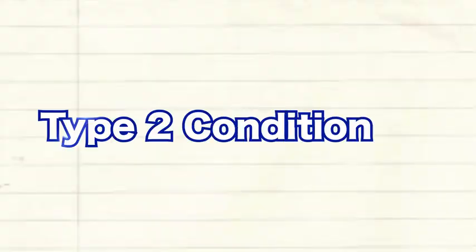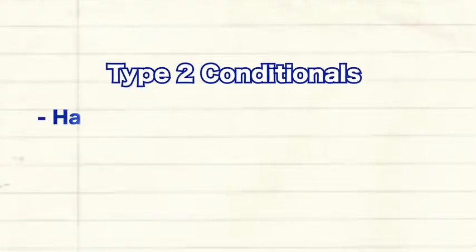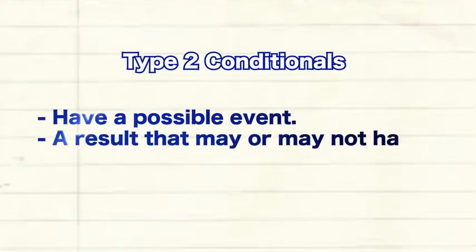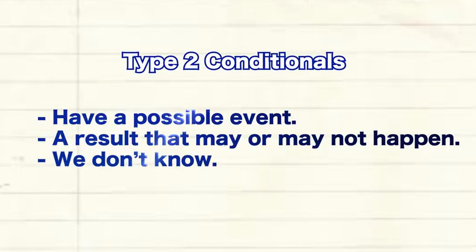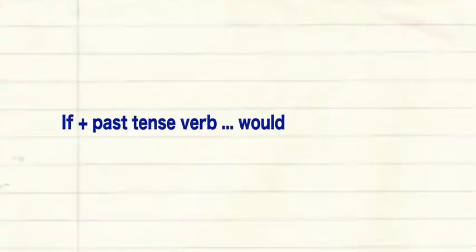Type 2 conditionals have a possible event and a result that may or may not happen. We don't know. Here is the pattern: 'if' plus past tense verb, 'would' plus infinitive verb.